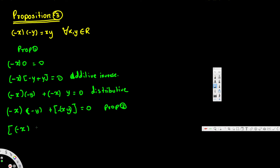We have negative x times negative y plus negative xy, and we are going to add xy to both sides, so xy is equal to zero plus xy.